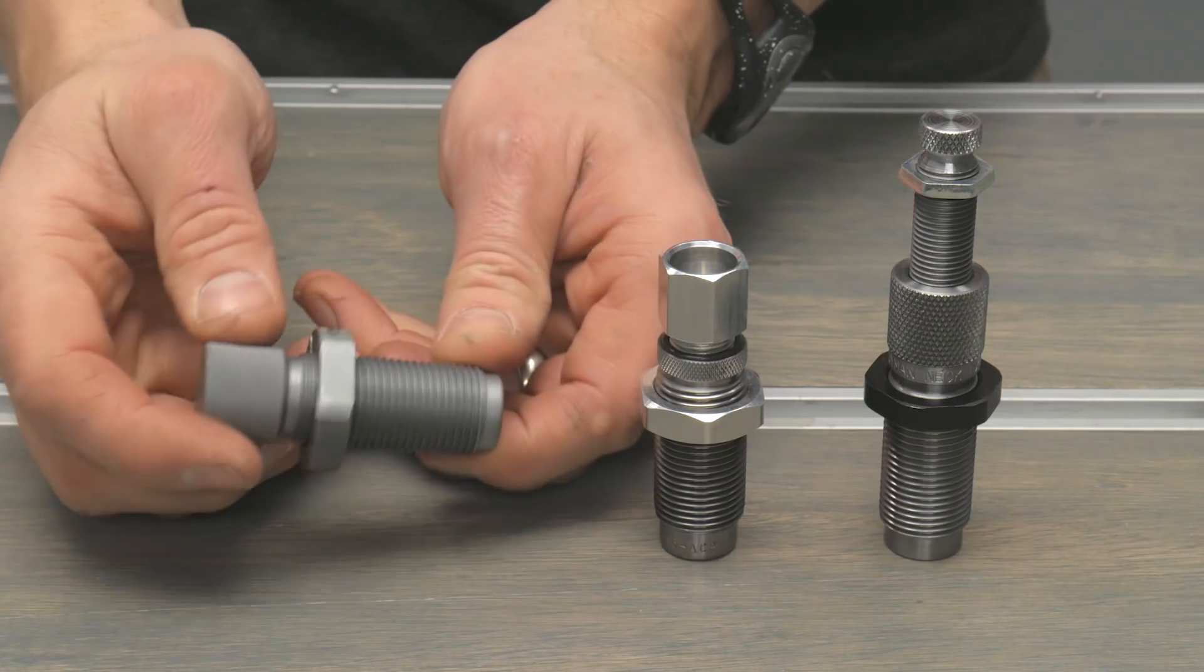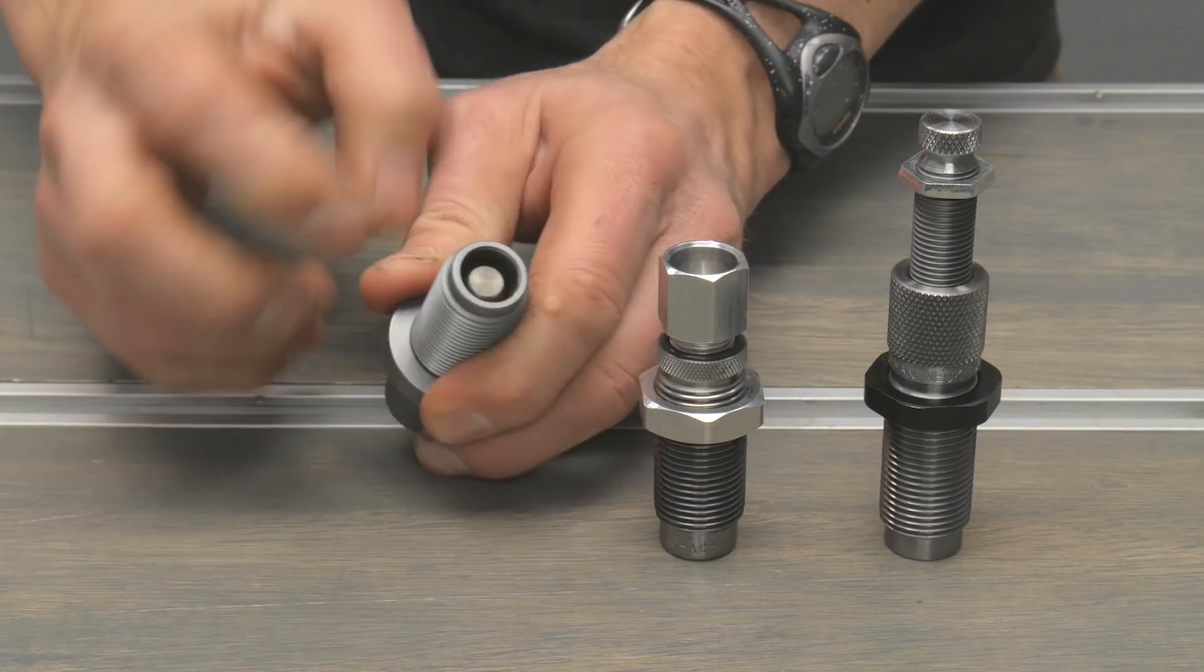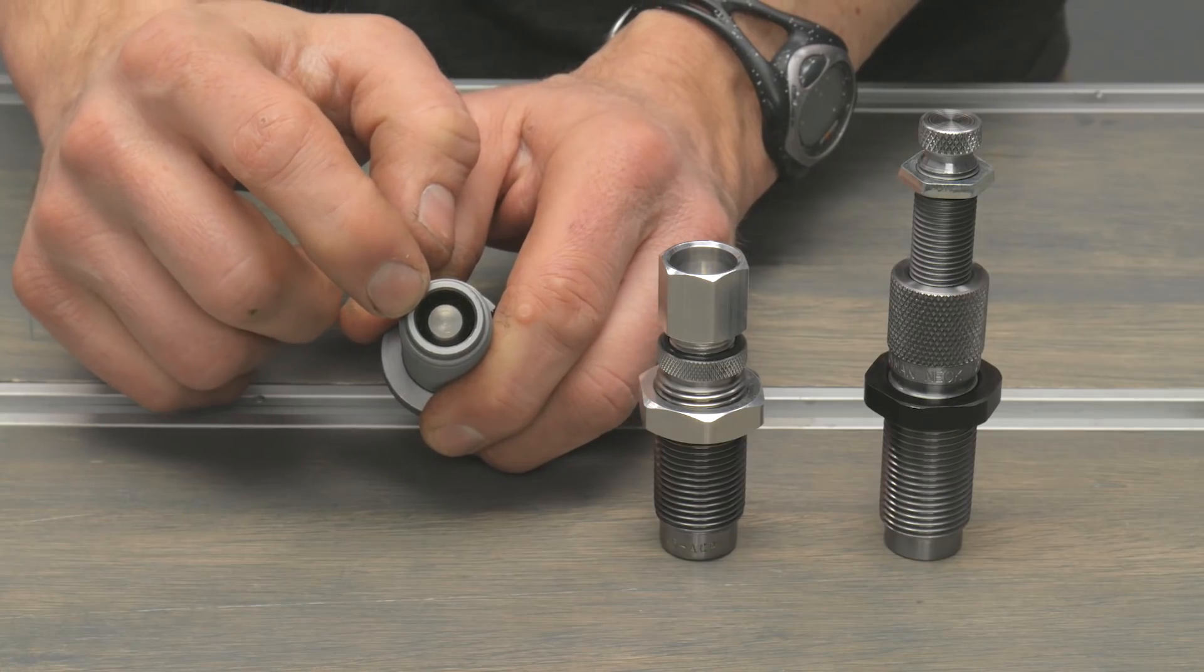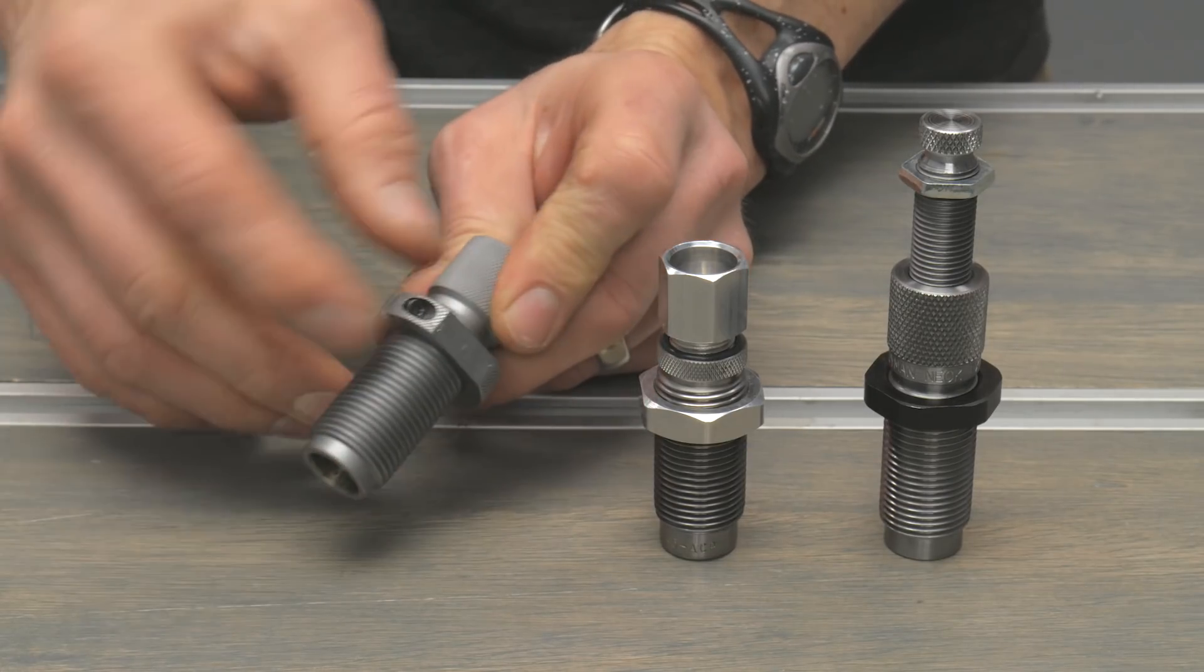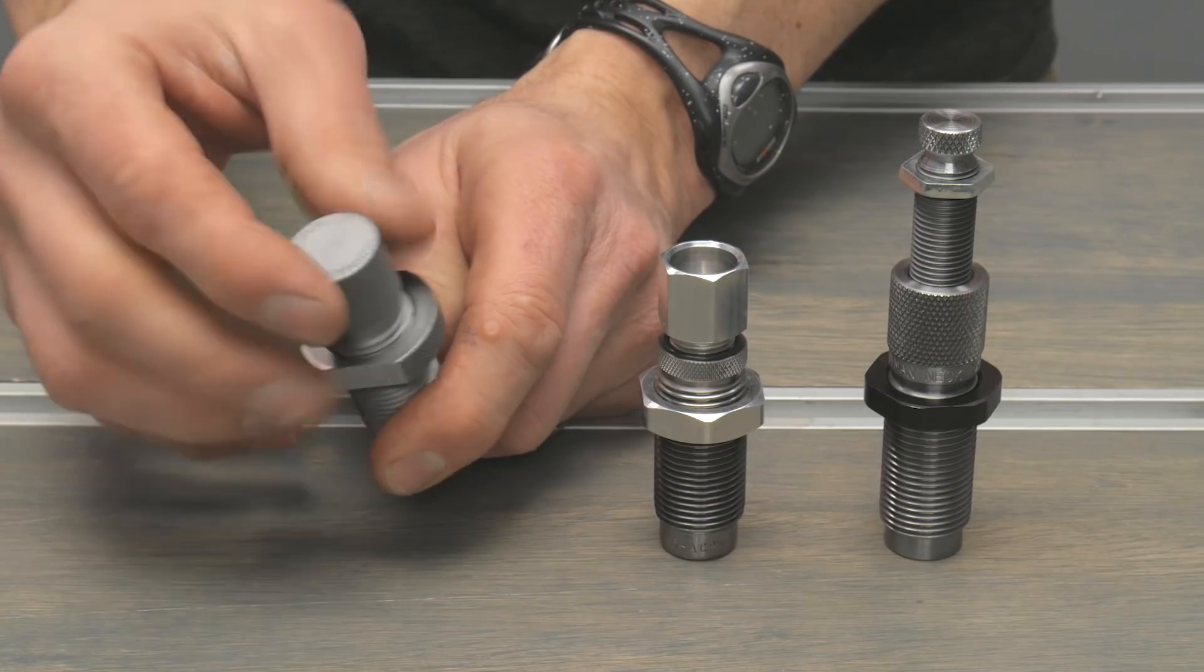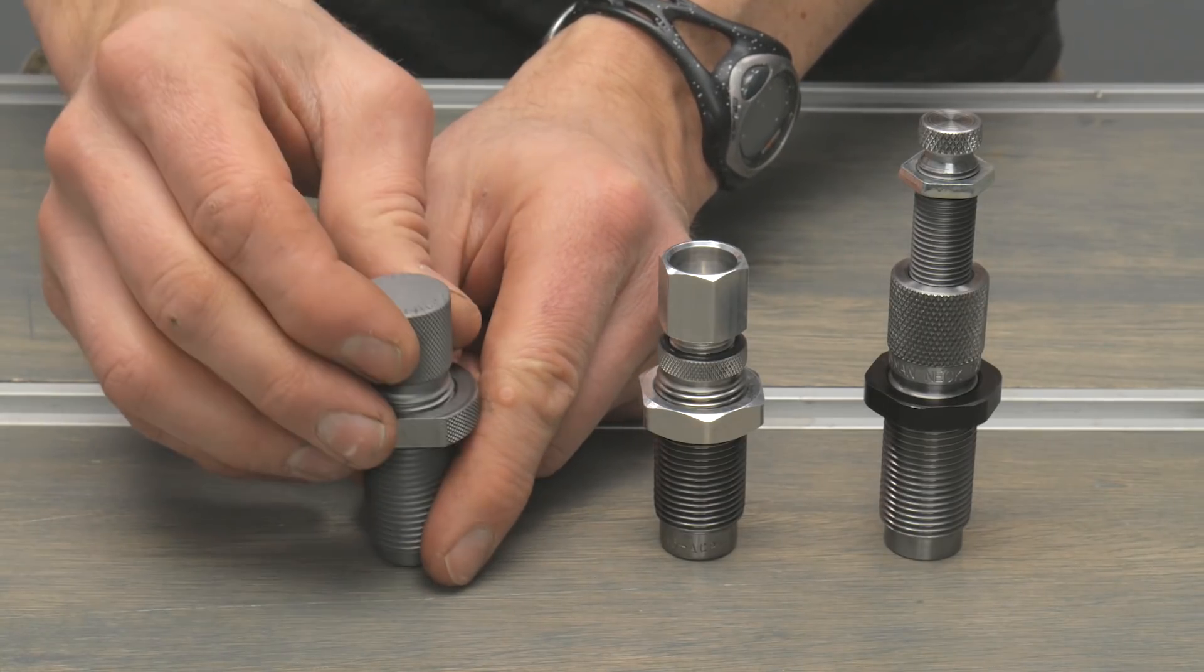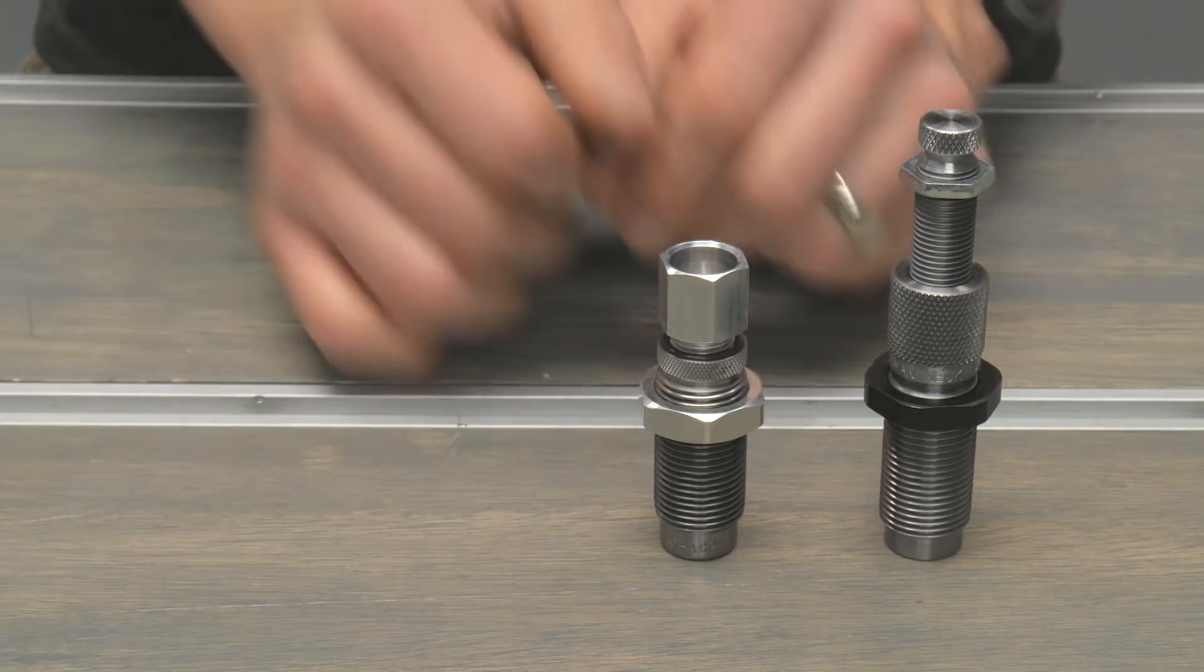The Hornady is a little different. The expander plug is basically the same. The big difference is that it's fixed in that the expander plug isn't removable, so you adjust the entire die to adjust your case mouth expansion.